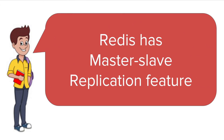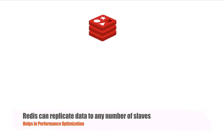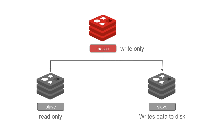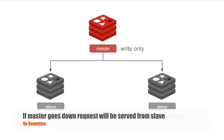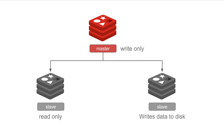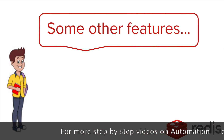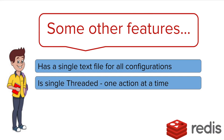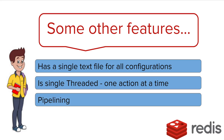So how can Redis scale? Redis has a very good master-slave replication feature. You can use different instances of Redis and make anyone as master and others as slave. A master can be used as a write only data store, whereas one of the slaves can be used for read only and the other slave can be used to write the data to the disk asynchronously. So it can increase the performance while the master and one of the slaves are doing read and write, and the other slave is writing the data to the disk at the same time. Redis has a single text file where you can put all your configurations. It is single threaded, which eliminates all the issues of thread lock wait timeout and similar issues. There is a pipelining feature in Redis where you can cluster multiple commands and send them at once, making Redis even faster.